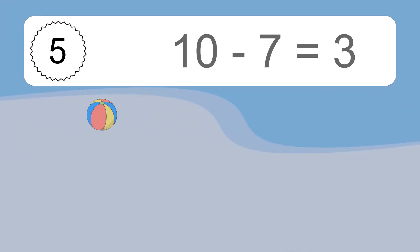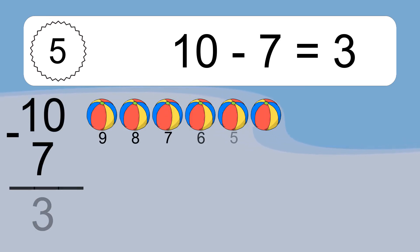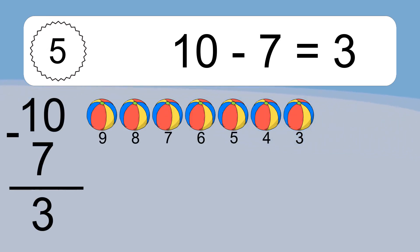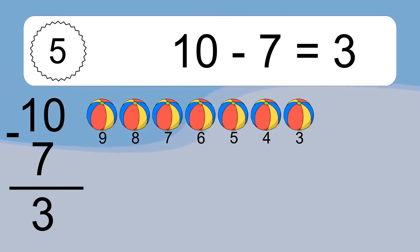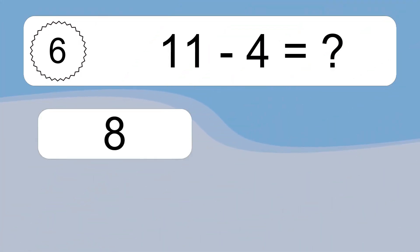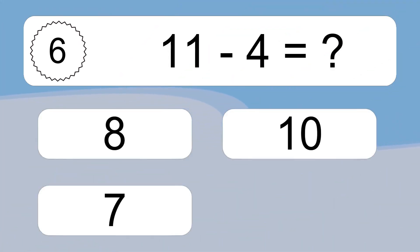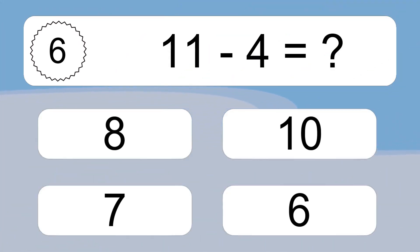10 minus 7 equals what? 10 minus 7 equals 3. Let's count it: 9, 8, 7, 6, 5, 4, 3.